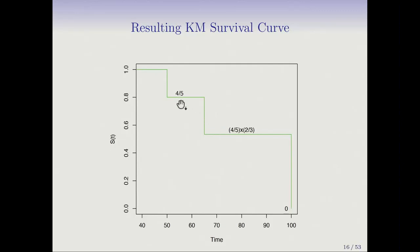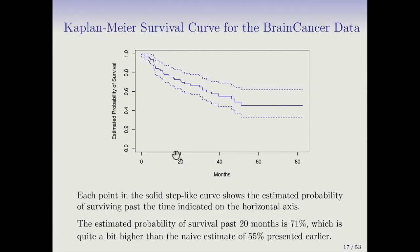With only five observations and three events the curve is rough, but generally with more data it's smoother. For the brain cancer data, here is the Kaplan-Meier curve with standard errors from Greenwood's formula — a stepwise function with a small step down at each failure. The estimated probability of surviving past 20 months from the Kaplan-Meier is 71%, considerably higher than the naive 55% we got by treating censored observations as deaths. The Kaplan-Meier curve is a very important summary and any survival analysis study starts with it.